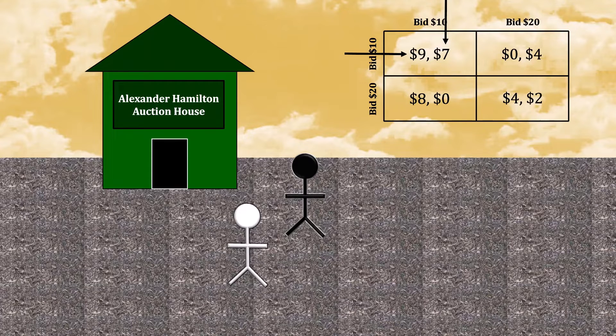But that's not the only reasonable and sustainable outcome. Imagine that you expected your opponent to bid $20. What should you do?